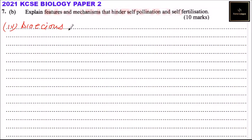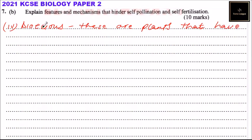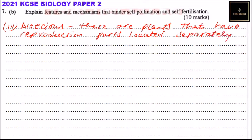Number four, we have dioecy. This refers to plants that have reproductive parts located separately on different plants of the same species. Because male and female organs are on separate plants, self-pollination is prevented.